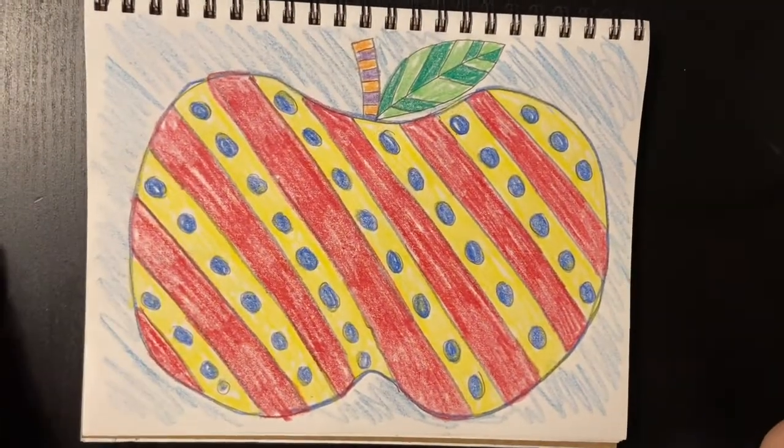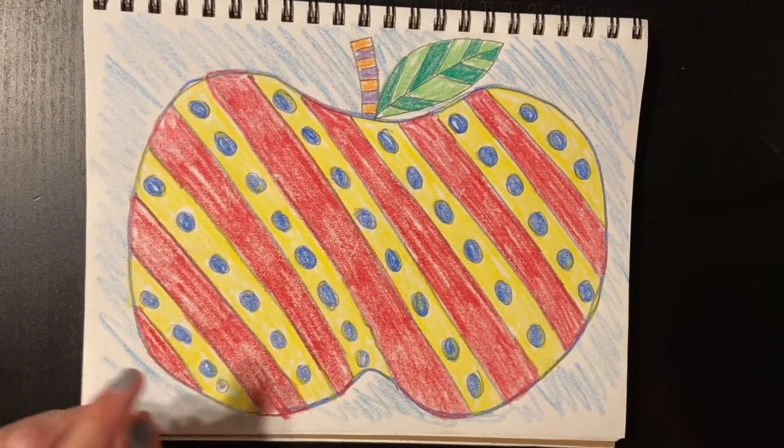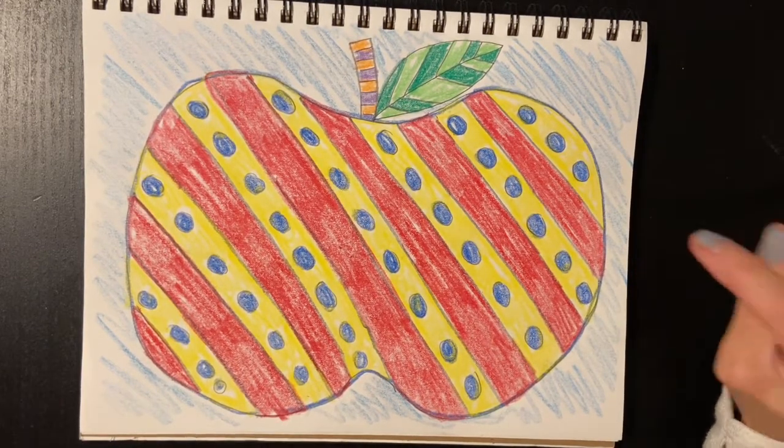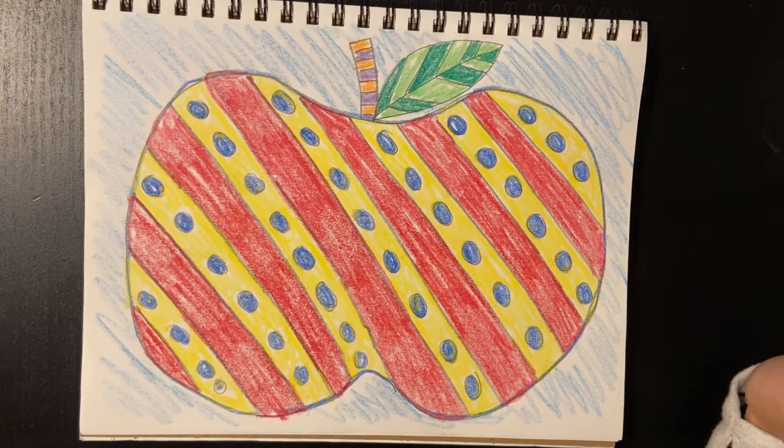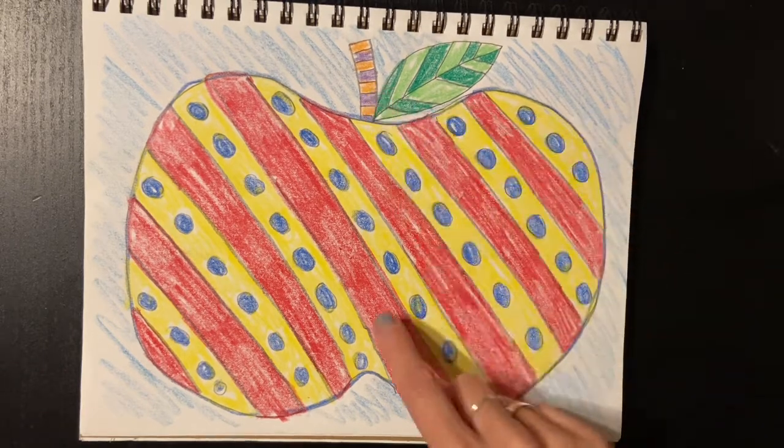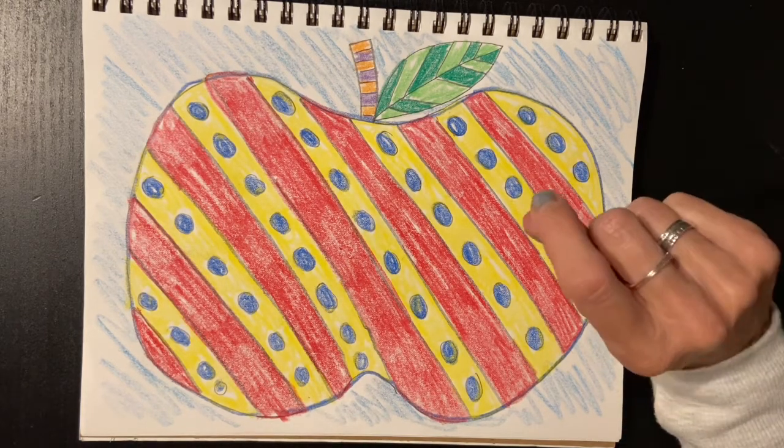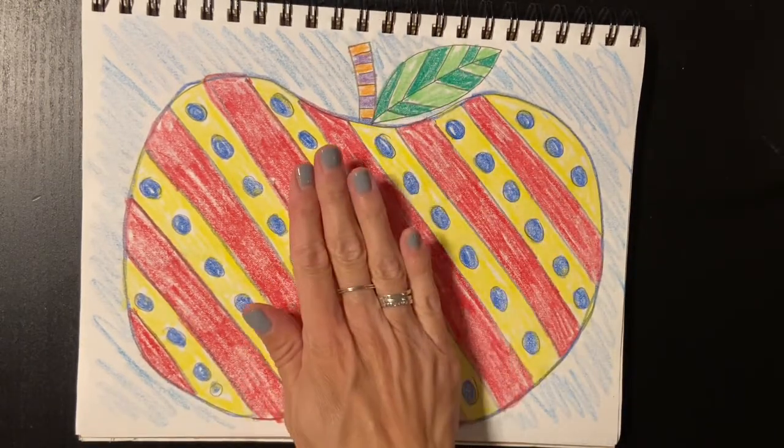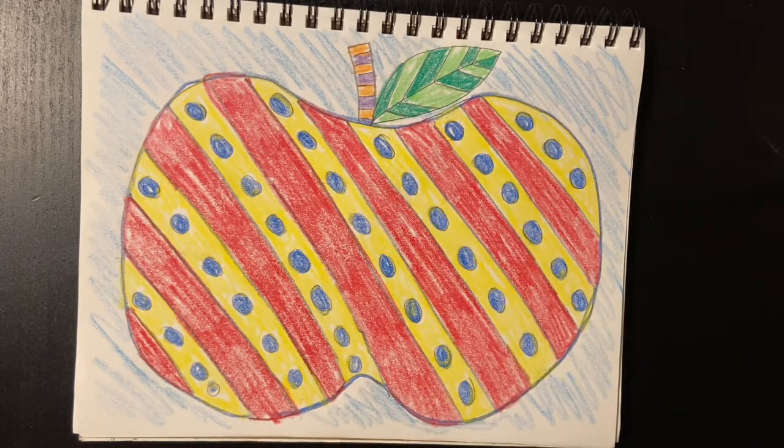As you can see, I finished coloring my crazy pattern apple. I didn't know if anybody noticed this, but I used three special colors in the apple: blue, yellow, and red. Who remembers what we call blue, yellow, and red? That's right, primary colors. And then I used two different color greens in my leaf, orange and purple in my stem—those are called, you got it, secondary colors. So I made a pattern and used primary colors in my apple and secondary colors in my stem and leaf. I cannot wait to see what you do!